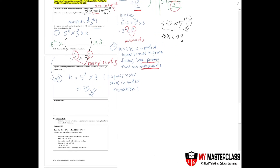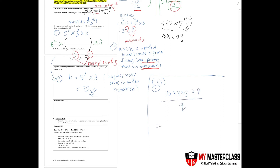Part 3 asks for prime numbers p and q such that 15 times 375 times p divided by q is a perfect cube. Step 1: write 15 times 375 times p divided by q, using 5 to the power of 4 times 3 to the power of 2 from part one. Since p and q must be prime, they cannot be powers like 5² or 3² — those are not prime. So p and q can only be single prime factors: 5 or 3.